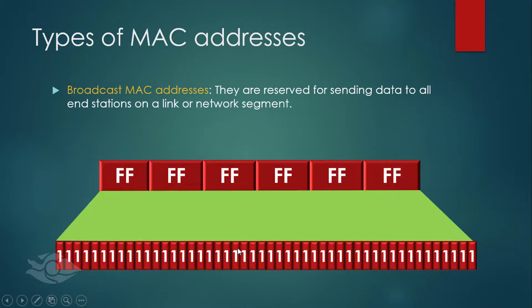To send a frame to all devices on a link, we use the broadcast MAC address of all Fs, which in binary is all ones.